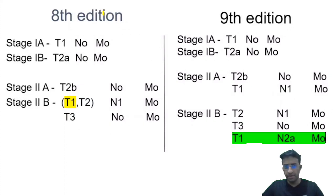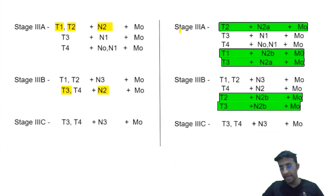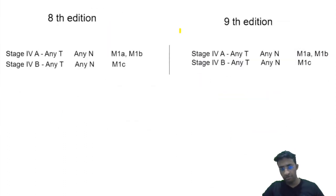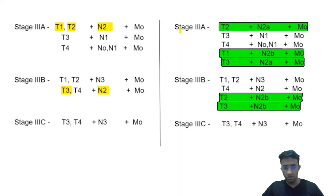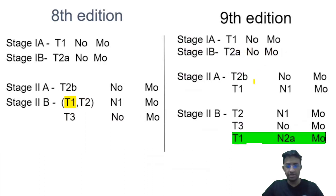Comparing the 8th and 9th editions, the overall staging structure is similar. Stage 1 has 1A and 1B; Stage 2 has A and B; Stage 3 has A, B, and C; Stage 4 has A and B — no changes there. Stage 1A remains T1, N0, M0. Stage 1B is T2A, N0, M0 — no changes.